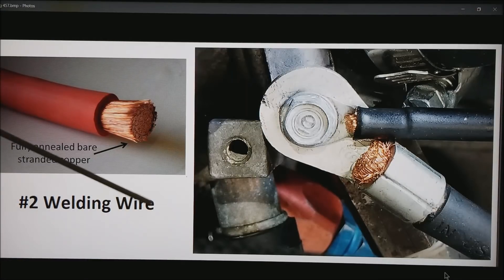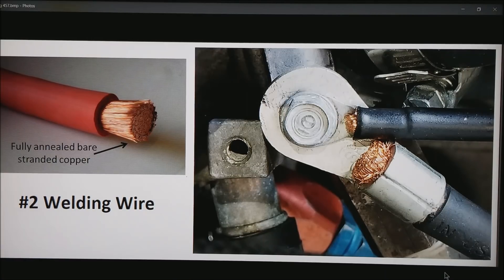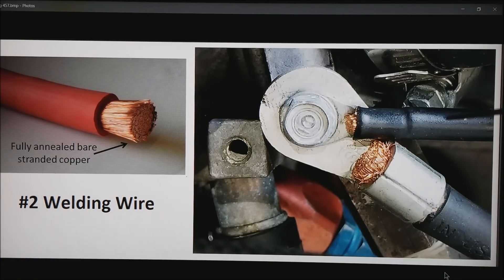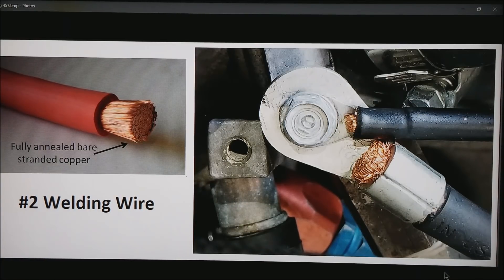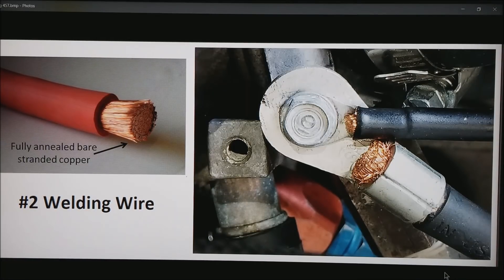What I get is number two welding wire from a welding supply house. They have the ability to put factory ends on this thing with some sort of big crimping tool. I always have them made up at the welding shop. Also what you're seeing in this picture, this happens to be my race motor, is my big ground wire and we'll get into that in a moment.